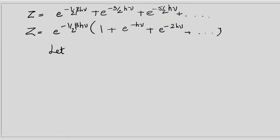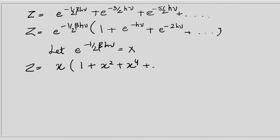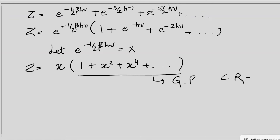Let us take x equal to e^(negative half beta h-nu). We can rewrite this expression as x times the quantity 1 plus x-squared plus x to the power 4, and so on. This is a geometric series because we get a common ratio of x-squared throughout.